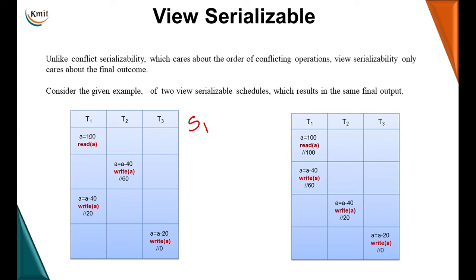Let's take a concrete example. In schedule S1, assume value of A is 100. T2 writes A performing A = A − 40, giving A = 60. Then T1 also performs A = A − 40, giving 60 − 40 = 20. Then T3 performs A − 20, giving 20 − 20 = 0.